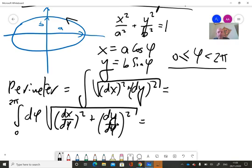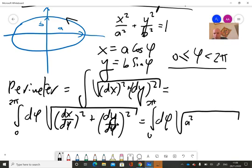The integral between zero and two pi of d phi, square root of what we have here: a squared sine squared phi plus b squared cosine squared phi. So this is a nice formal formula for the perimeter.